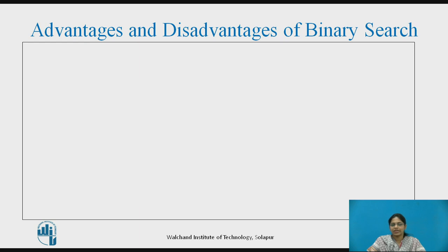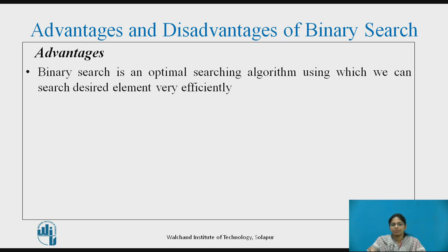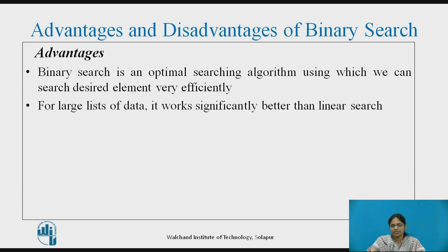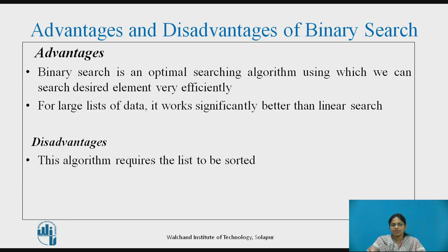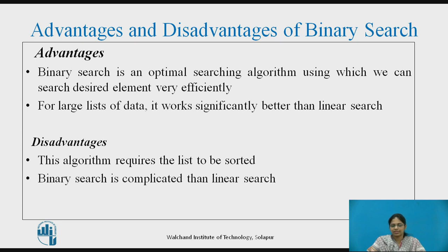Let us see the advantages and disadvantages of binary search. Advantages: Binary search is an optimal searching algorithm using which we can find a desired element very efficiently. For large lists of data, it works significantly better than linear search. Disadvantages: This algorithm requires the list to be sorted, and binary search is somewhat more complicated than linear search.